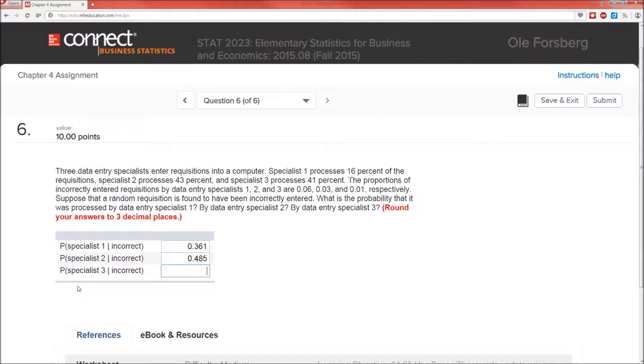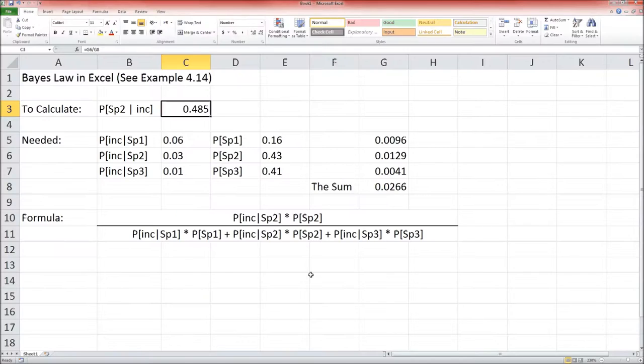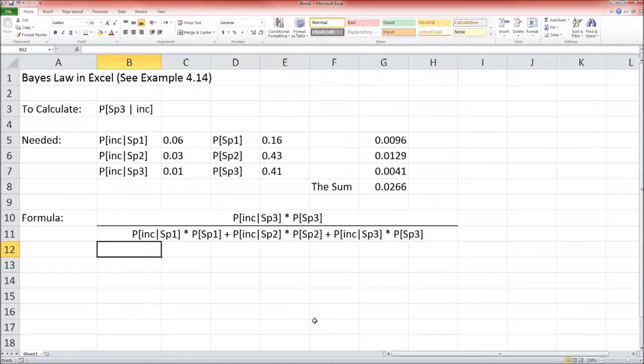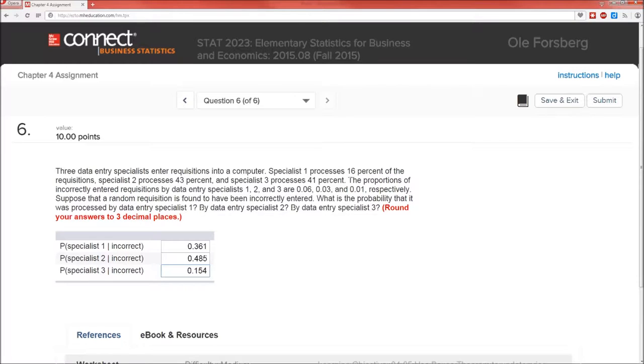And let's, while we're at it, let's go ahead and do specialist 3. Now there's two ways of doing specialist 3. We know that these 3 have to add up to 1, because there's only three specialists there. So we could do 1 minus 0.458 minus 0.361. That's one way of doing it. But since we have this Microsoft Excel spreadsheet set up so nicely, lots of S's on that one, I can just calculate it using Excel. This is probability of incorrect given specialist 3 times probability of specialist 3, divided by that sum. 0.154. And note that those three numbers do indeed add up to 1, which is helpful.